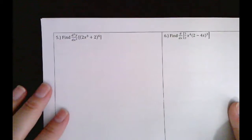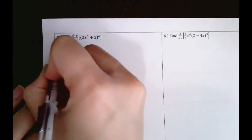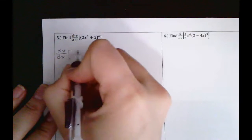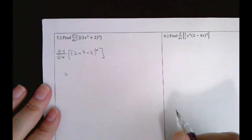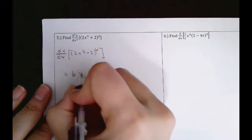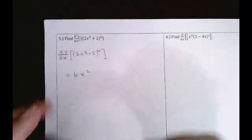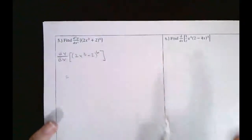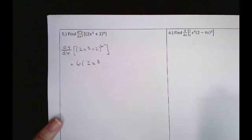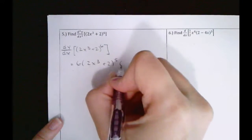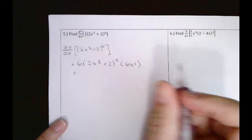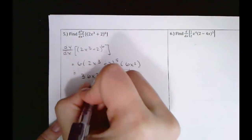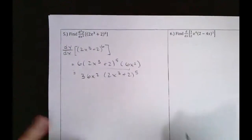For this one, you're finding the second derivative. First, just find dy over dx. That'll be — wait, sorry, there's a 6 there, so we need the chain rule. So you do 6 times 2x cubed plus 2 to the 5th power, times the derivative of the inside, which is 6x squared. It's easier if you simplify — combine those to get 36x squared times 2x cubed plus 2 to the 5th. That would be the first derivative.